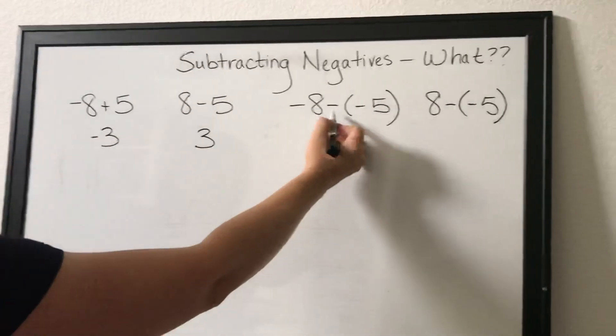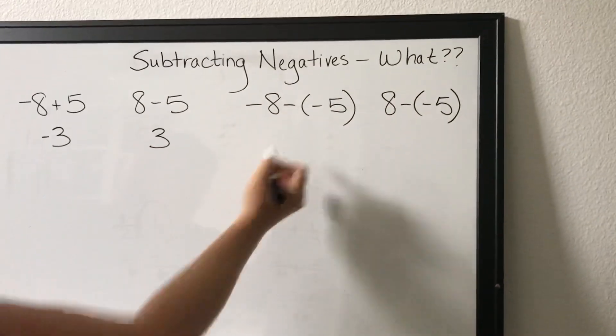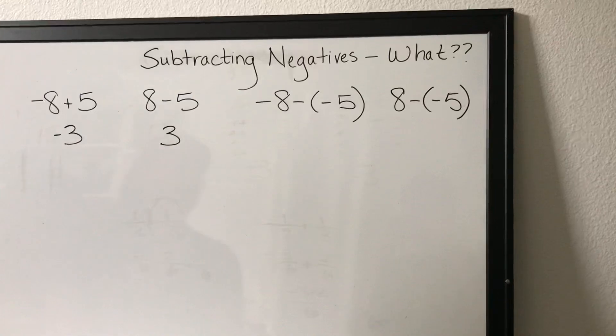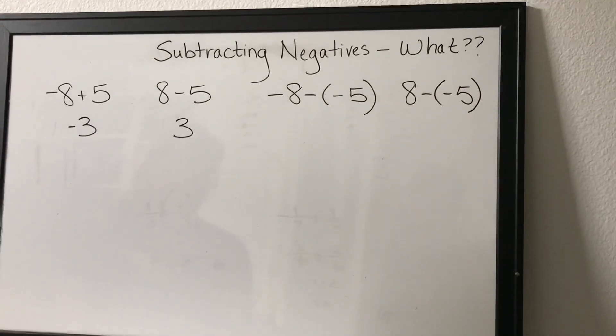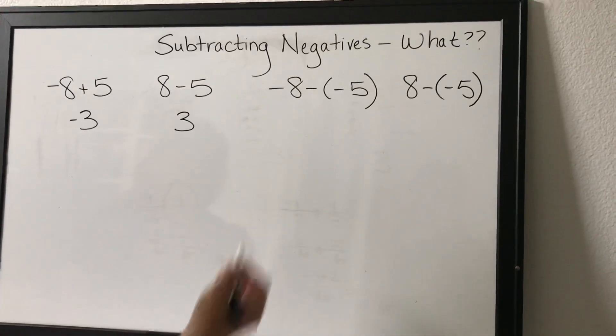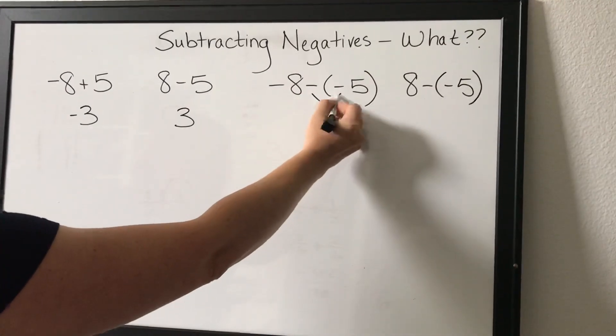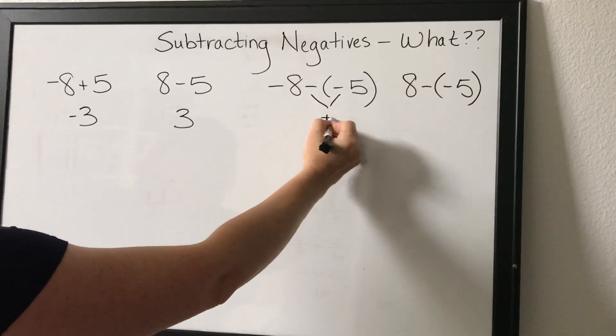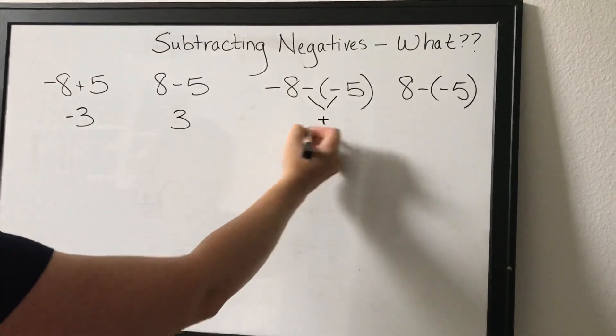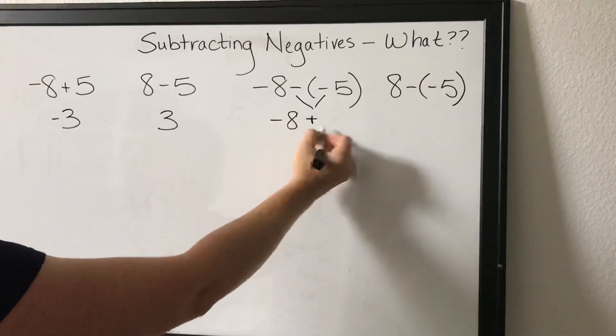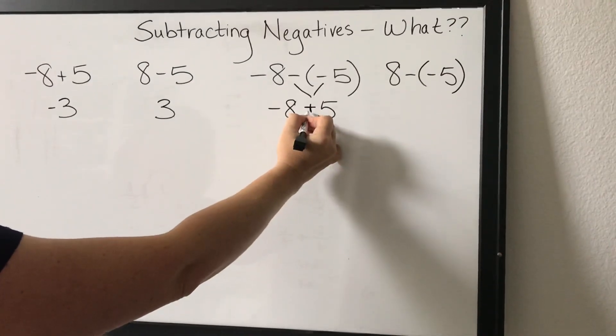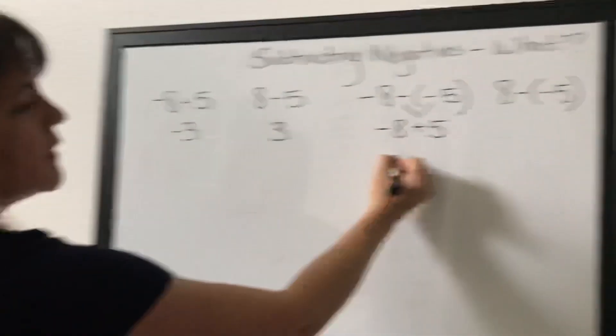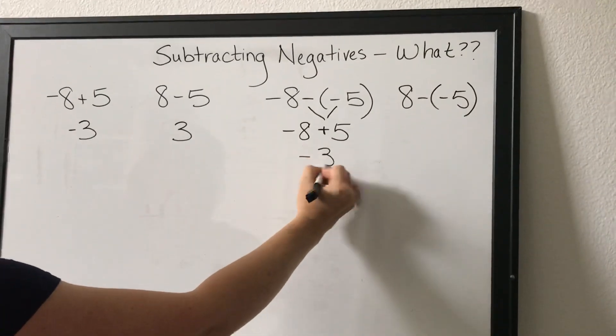But what about when you have a negative negative? Well it's like saying double negative. I ain't got no friends. Well I don't not like him. When it's a double negative what you actually mean is the opposite of negative. So this is just a positive sign which takes us exactly back to this one negative three.